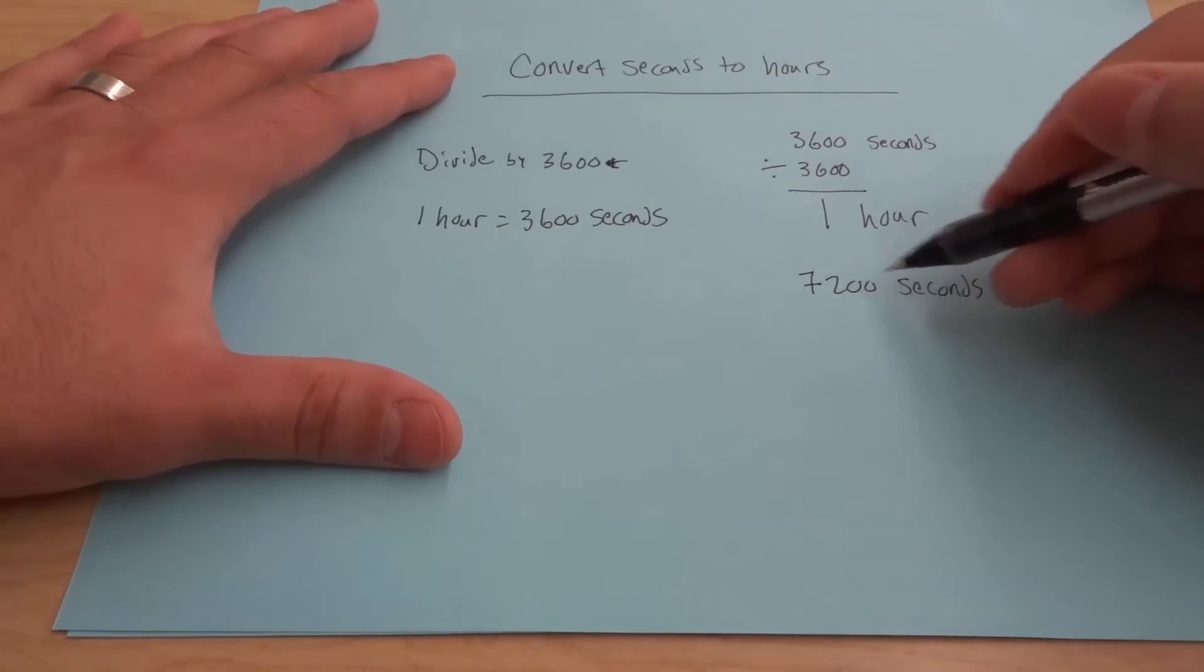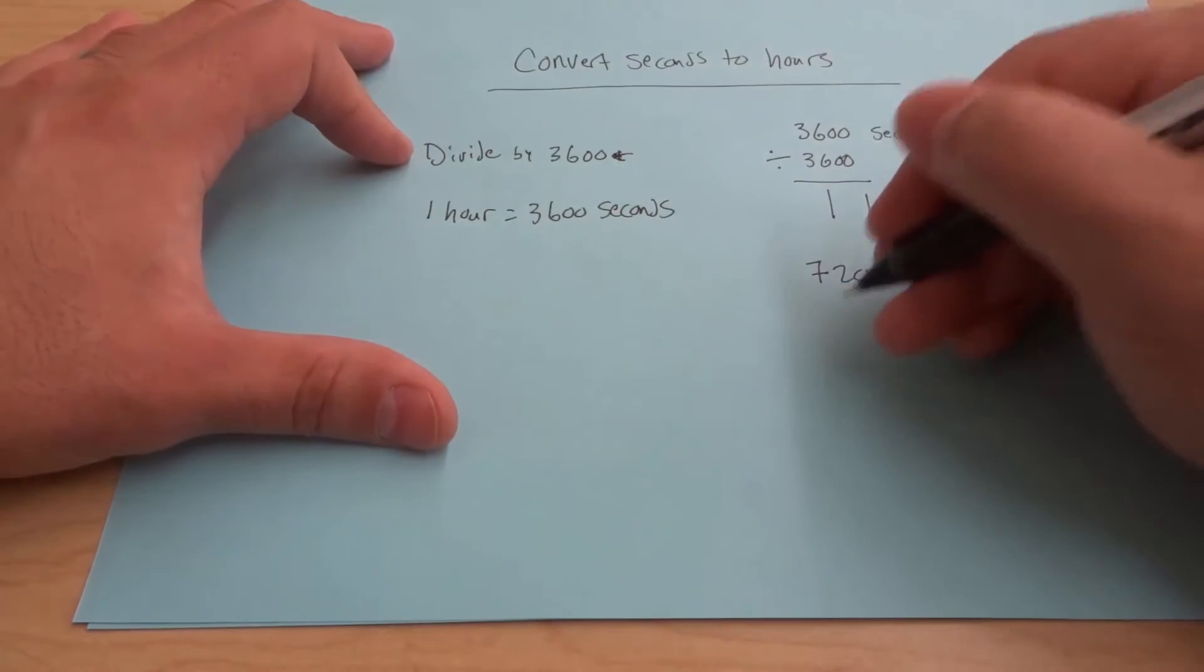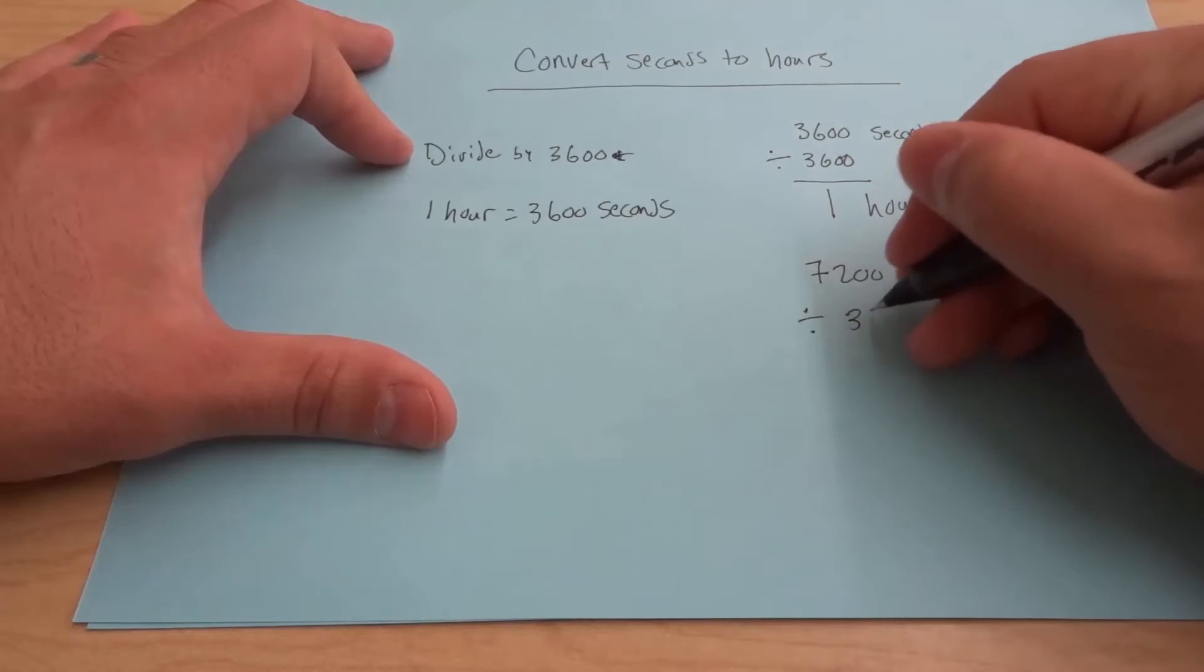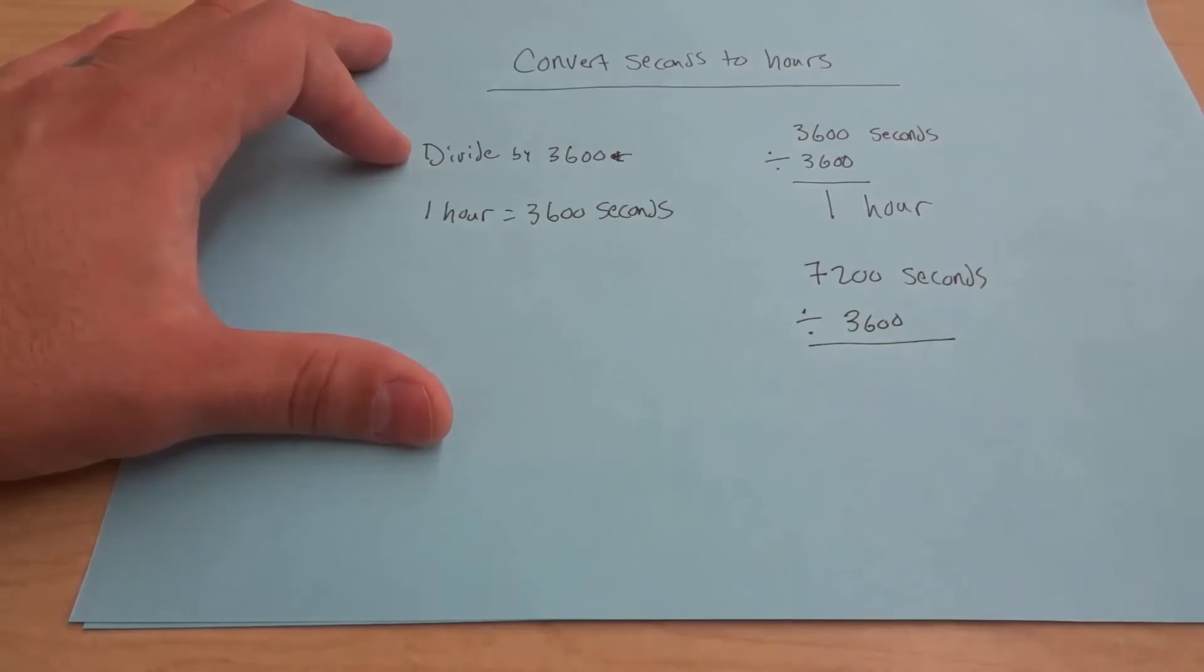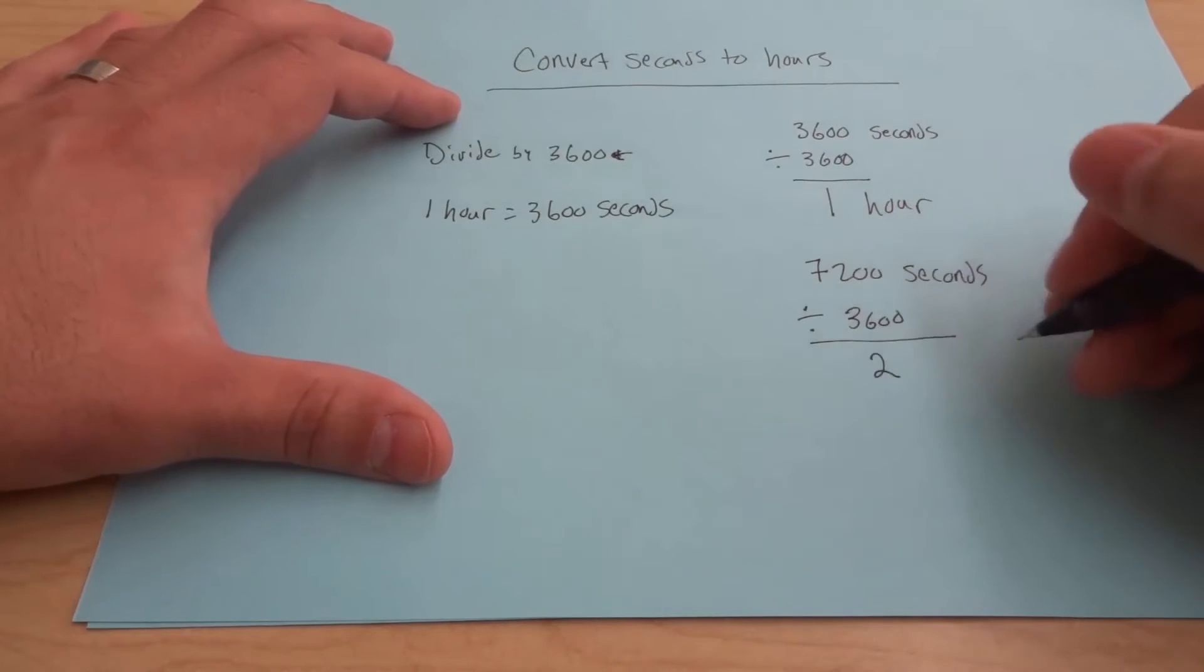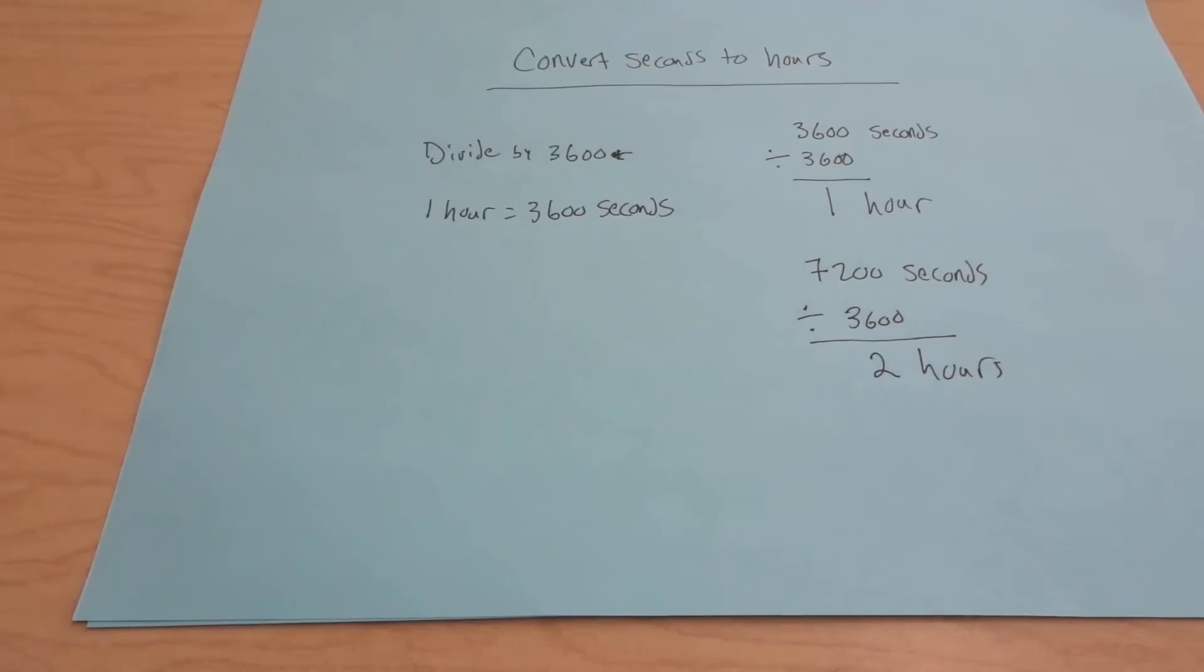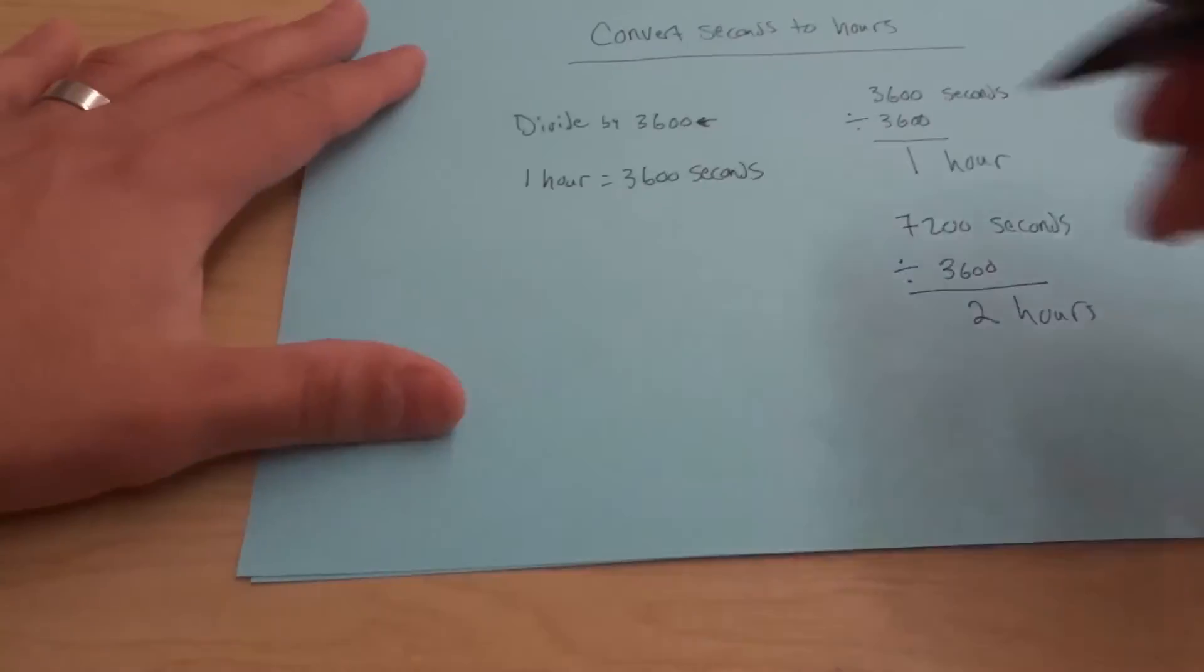Okay, so I would take the 7,200 seconds and I would divide it by 3,600. So I'm going to divide it by 3,600. Now when you do the math, it's going to give you 2. Therefore, 7,200 seconds is equivalent to 2 hours. So that's one way to actually convert seconds to hours. Okay, and I'll just draw a little nice divider right over here.